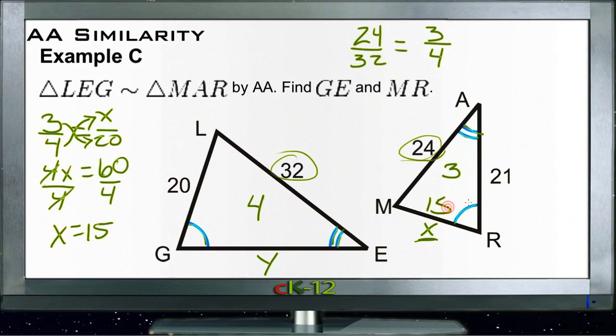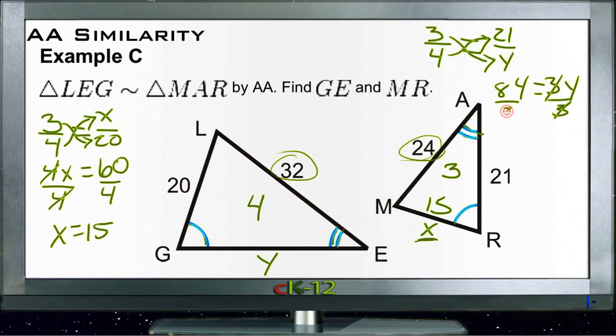Then for GE, which we've designated with Y, it's going to compare to 21. So we can say that 3 over 4 compares to 21 over Y. Now we have 4 times 21, that's 84, and that equals 3 times Y, that's 3Y. Then we divide both sides by 3 and we get 28 equals Y. So this side down here must be 28 units. And there we go.